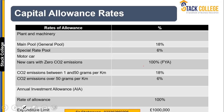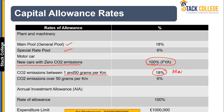This is the table provided in the tax sheet under the allowances column. We have the main pool and special rate pool with their respective WDA rates. For cars: a new car with zero CO2 emission attracts 100% First Year Allowance; cars with CO2 of 1 to 50 grams per kilometre fall in the main pool and attract 18% WDA; cars over 50 grams per kilometre are special rate pool items and attract 6% WDA.